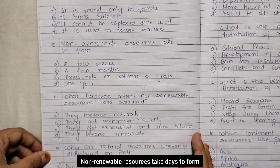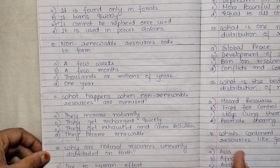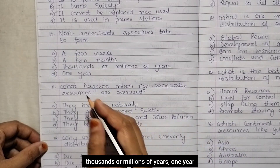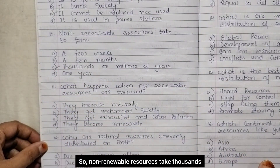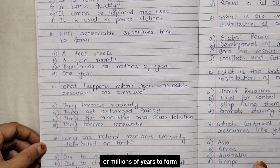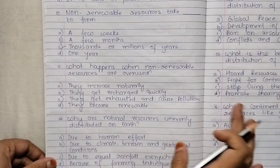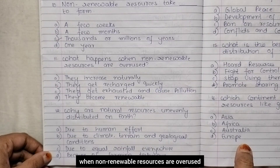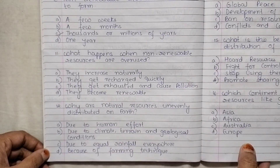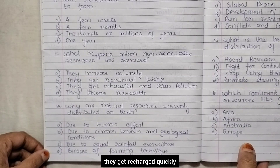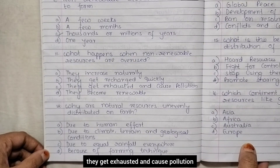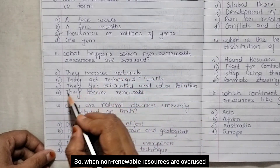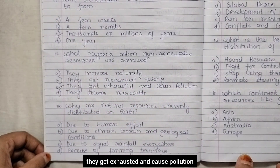Non-renewable resources take how long to form? Options are a few weeks, a few months, thousands or millions of years, one year. Non-renewable resources take thousands or millions of years to form. What happens when non-renewable resources are overused? Options are they increase naturally, they get recharged quickly, they get exhausted and cause pollution, they become renewable. When non-renewable resources are overused, they get exhausted and cause pollution.